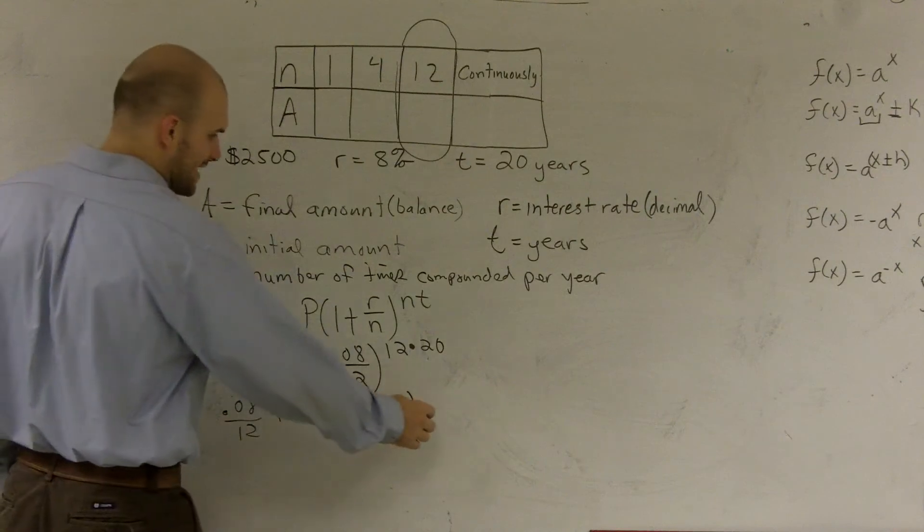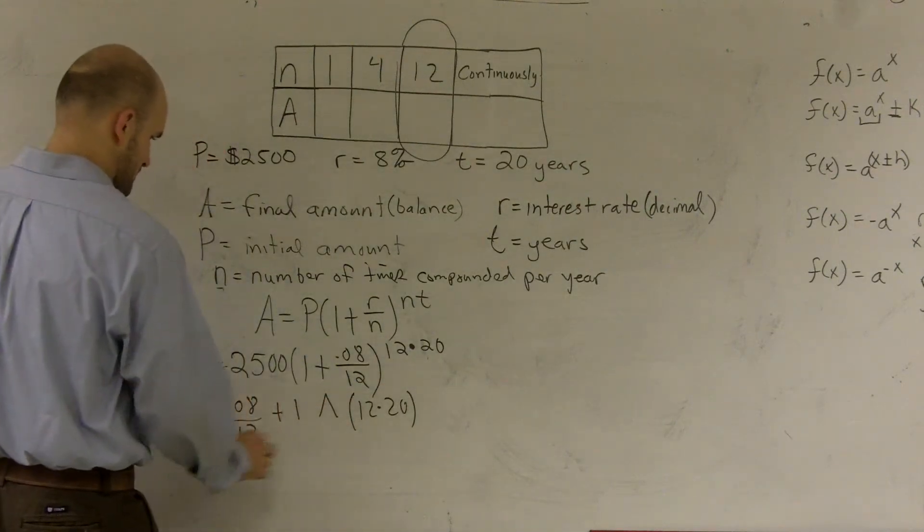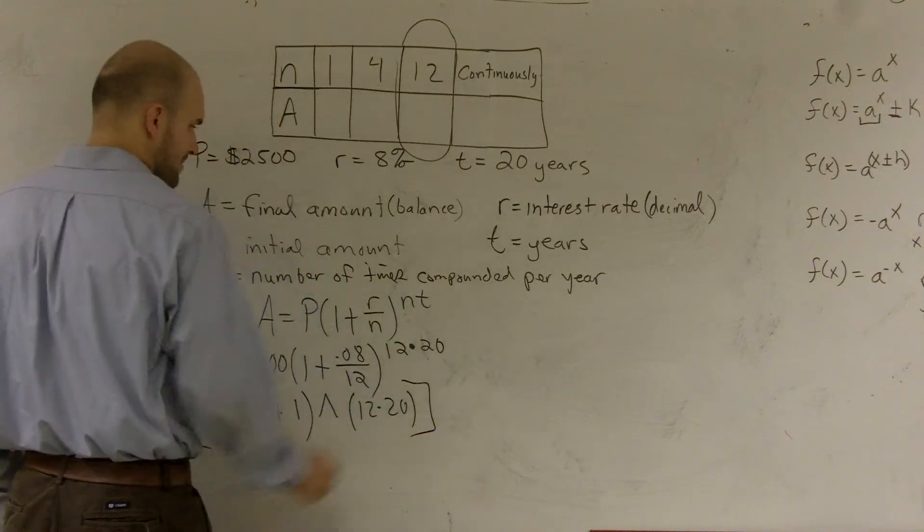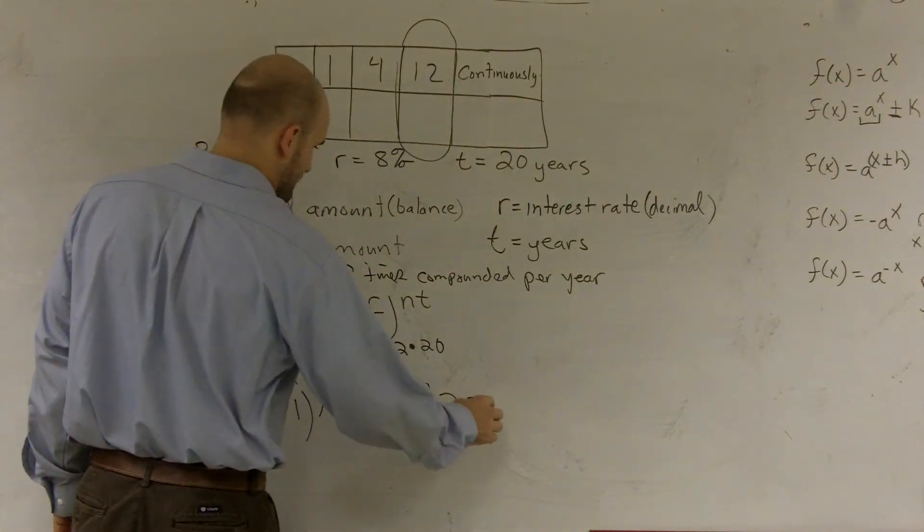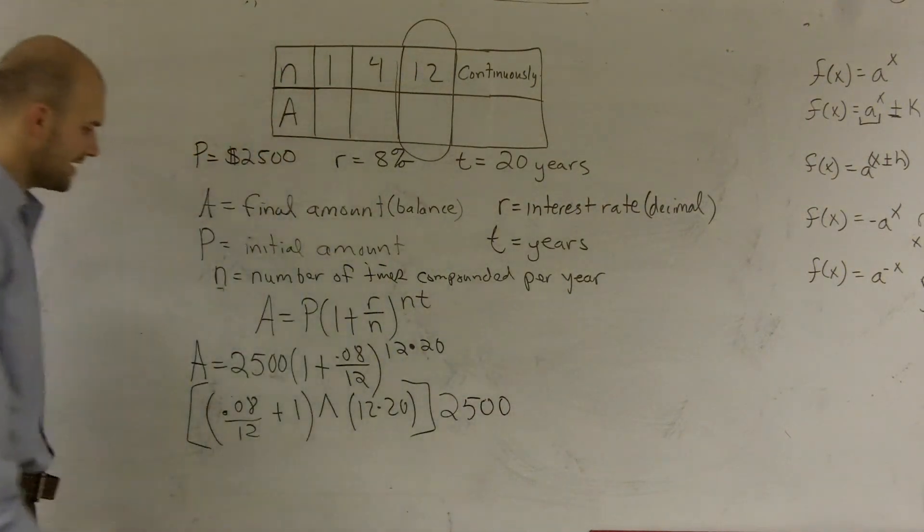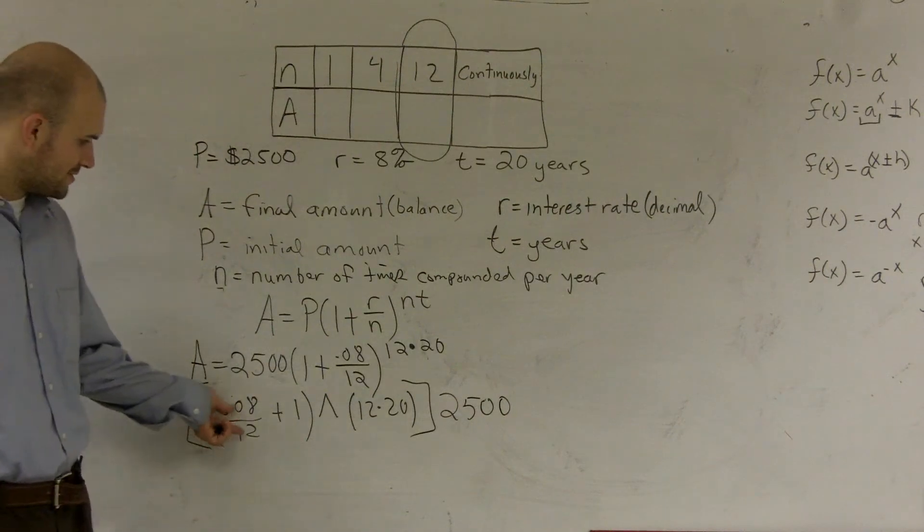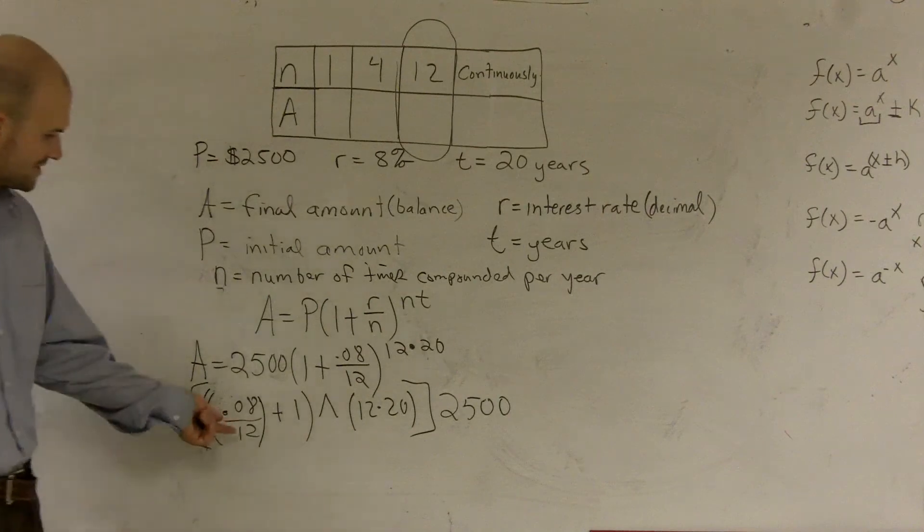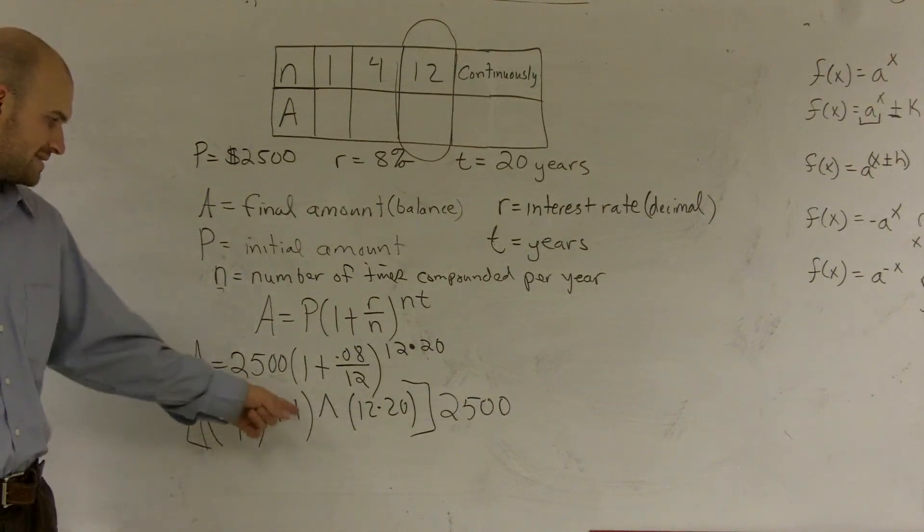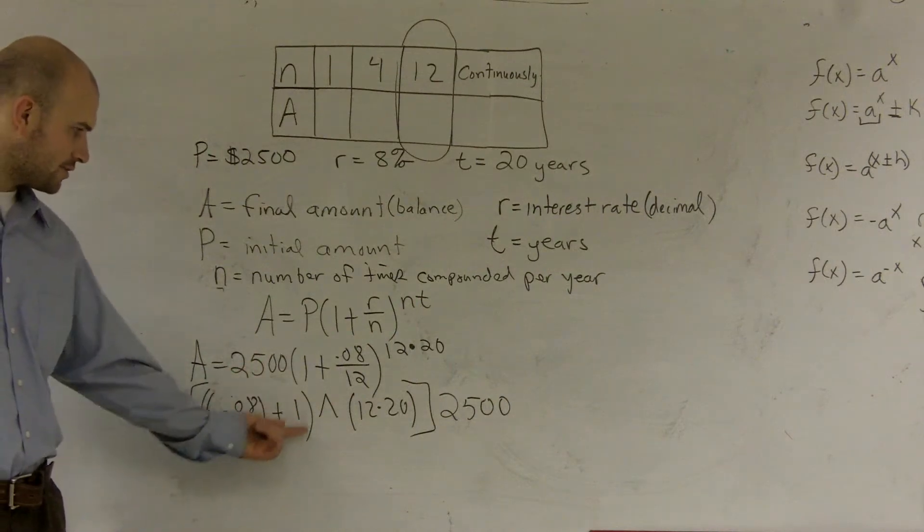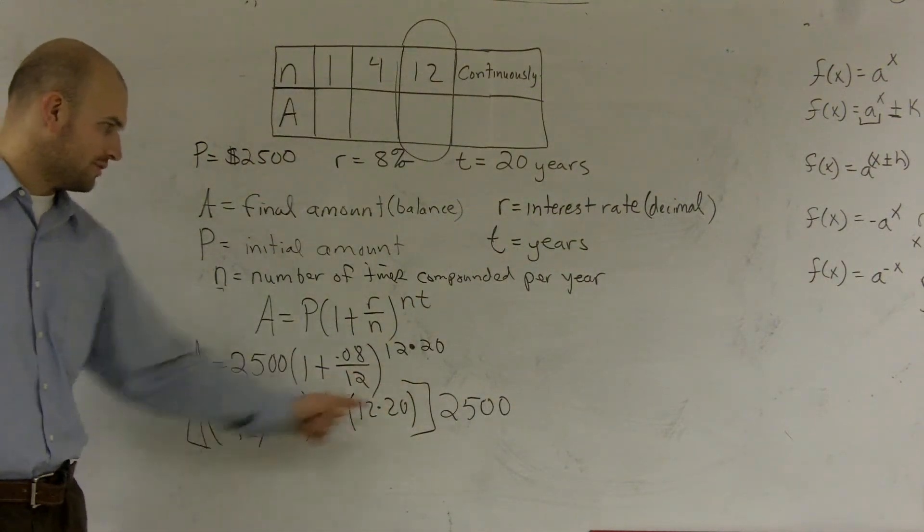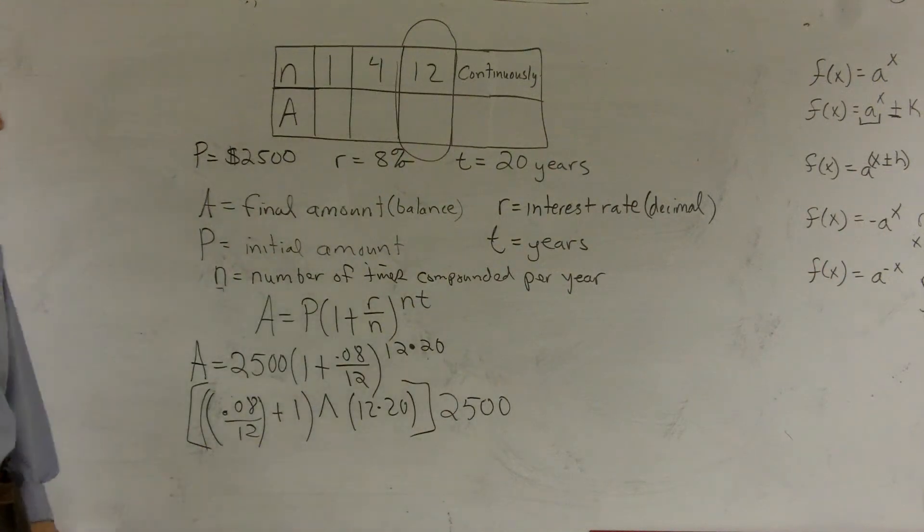And then, once I get that answer, I'm going to multiply that by 2,500. OK. So again, the first thing I like to do is, I like to take 0.08 divided by 12, find that answer, add it to 1. Take this answer, raise it to 12 times 20, then take that whole answer and multiply it by 2,500.